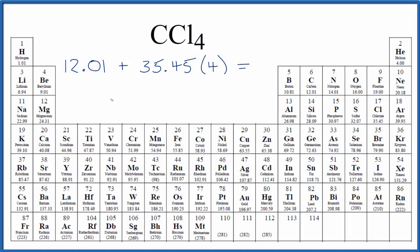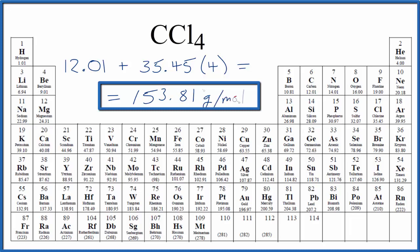When we do that, we get 153.81 grams per mole. My periodic table rounds to two decimal places. If your periodic table is different, you might get a slightly different answer.